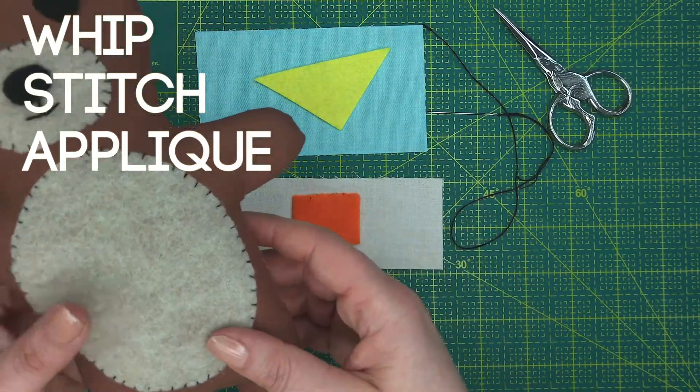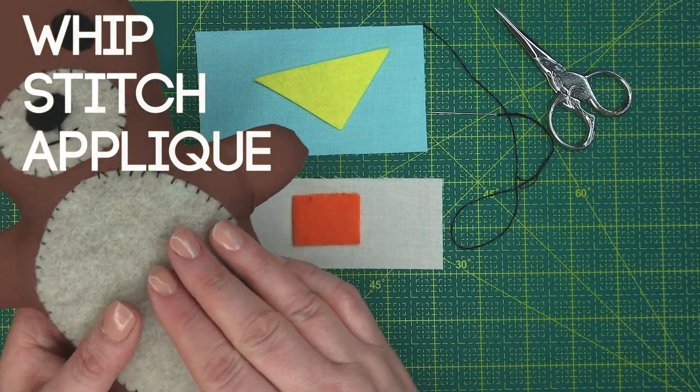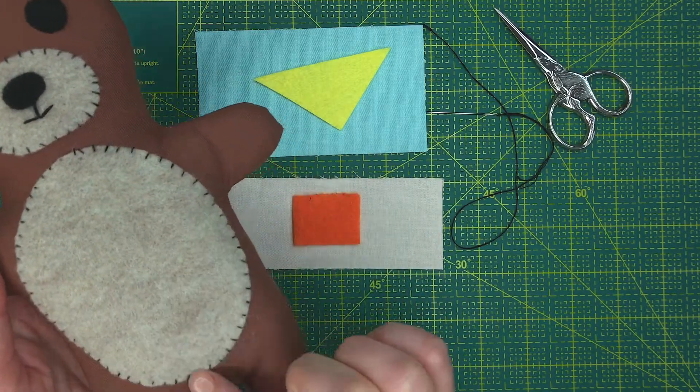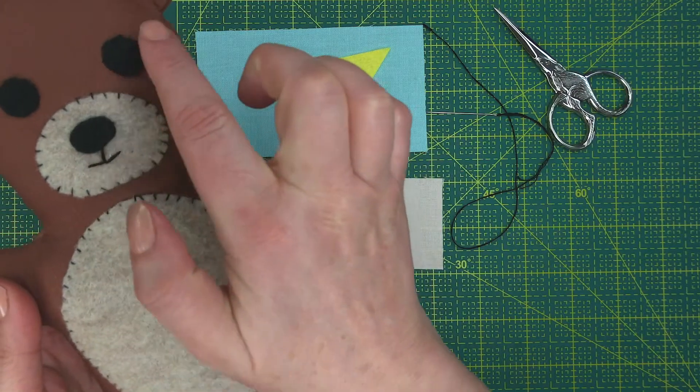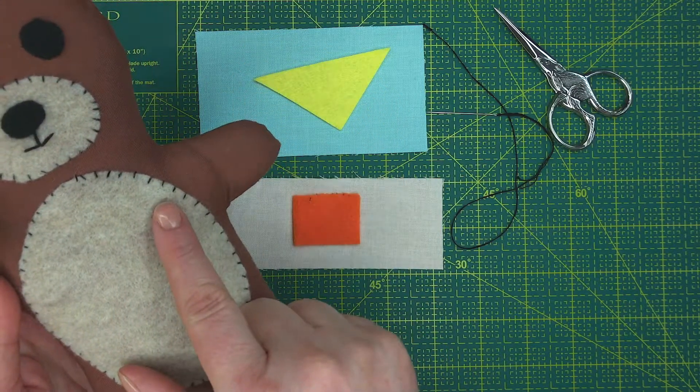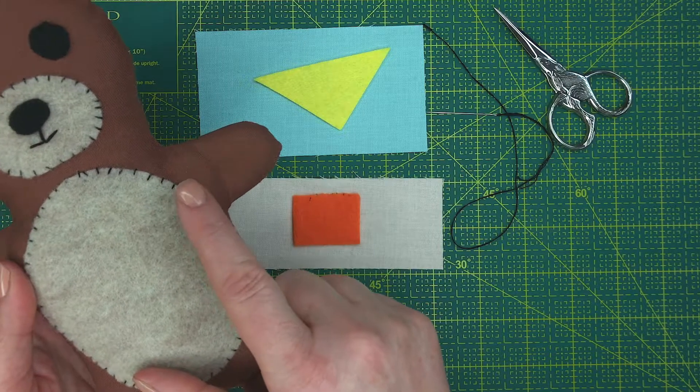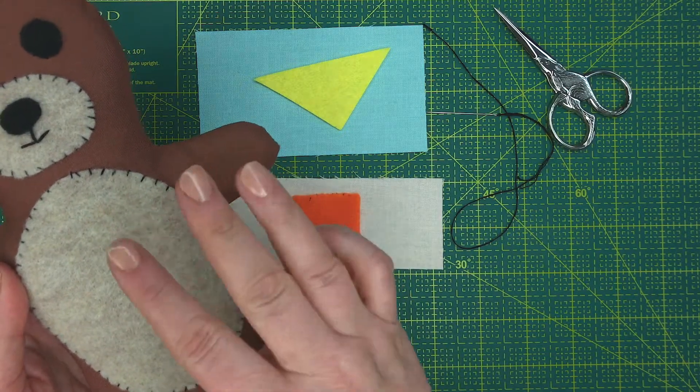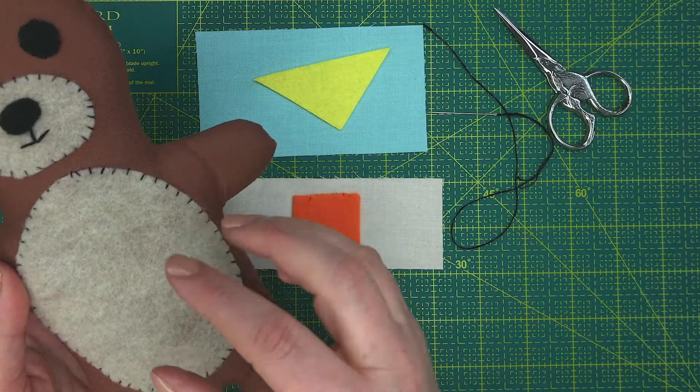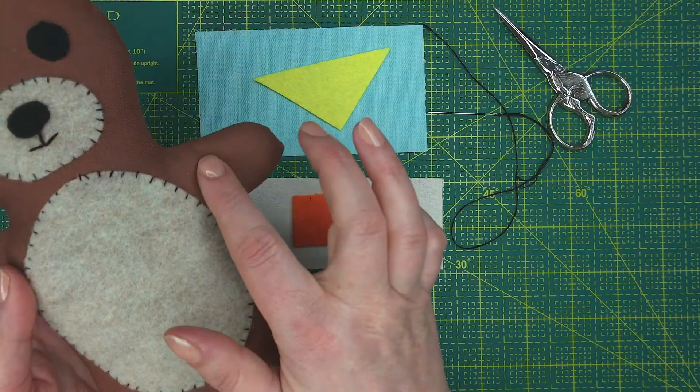Hi, in this brief video I'm going to go through whip stitch applique, and this is what whip stitch applique looks like. On the fur here you can see it's quite a large stitch, and that's used as a decorative embellishment as well as attaching the felt to the actual softy bear body.